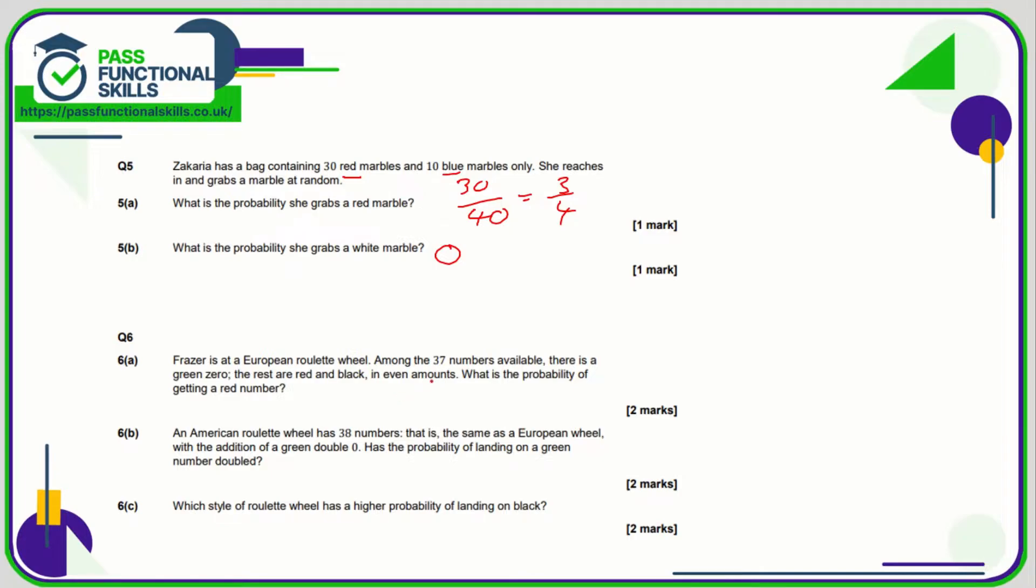6a: So there's 37 numbers available, there's one green zero, so therefore if we get rid of the green zero there are now 36 numbers available which are split evenly red or black. 36 divided by 2 is 18, so there's 18 red, 18 black. So the probability of getting a red is 18 out of 37.